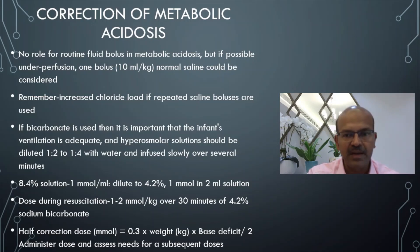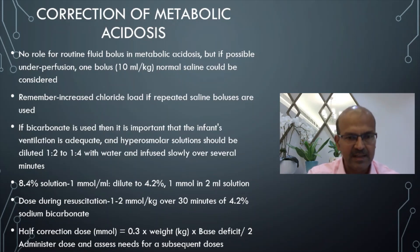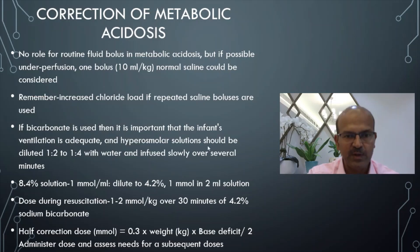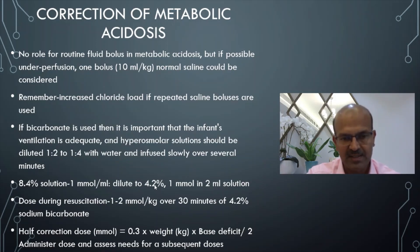If bicarbonate is used, please remember that the infant's ventilation is adequate. As mentioned, the paradoxical CO2 release and intracellular and CNS acidosis effect is there. The hyperosmolar solution should be diluted 1:2 or 1:4 and infused slowly. Normally we have 8.4% solution — 1 millimole in 1 ml — diluted to 4.2%, which is what we use in newborns as a minimum. You can double dilute to 1:4 as well, giving 1 millimole in 2 ml solution.